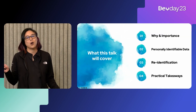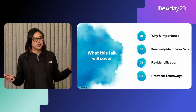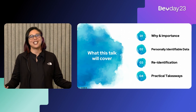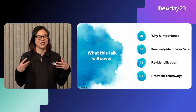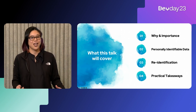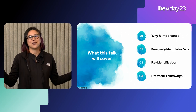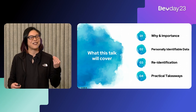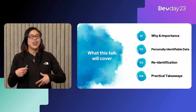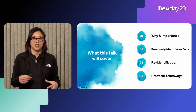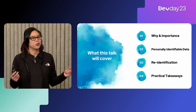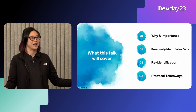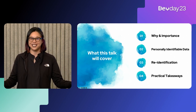So what will this talk cover? First, we're going to talk about why it's important that we protect user identity and personally identifiable information, and we'll talk about what is personally identifiable information and data. Then we're going to get into the dangers of re-identification, and then finally we're going to end with some practical takeaways that people can go and implement.